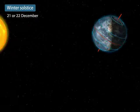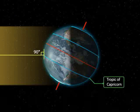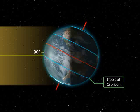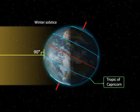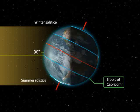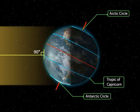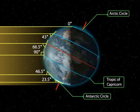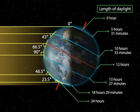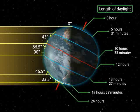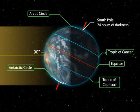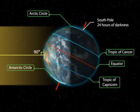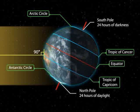Winter solstice: On the 21st or 22nd of December, the overhead Sun is over the Tropic of Capricorn. It receives the largest amount of solar radiation. On this day, the northern hemisphere is in the winter solstice, while the southern hemisphere is in the summer solstice. The angle of the Sun decreases towards the poles. On this day, the length of daytime in the northern hemisphere is the shortest in the year, while that of the southern hemisphere is the longest in the year. There are 24 hours of darkness at the Arctic Circle and 24 hours of daylight at the Antarctic Circle.